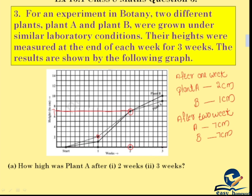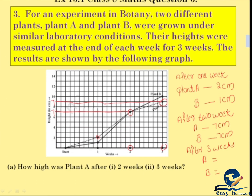After 3 weeks, Plant B has the same height as before. At 3 weeks, looking at the same point, Plant A is between 8 and 10, so Plant A is 9 cm. Plant B at 3 weeks is 10 cm.